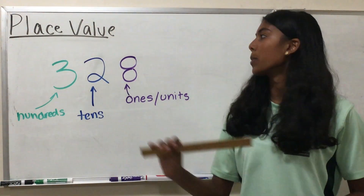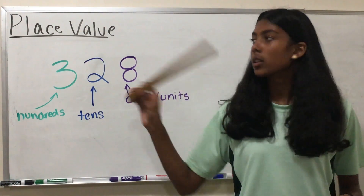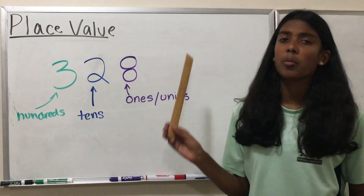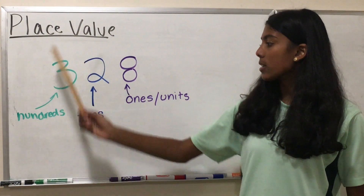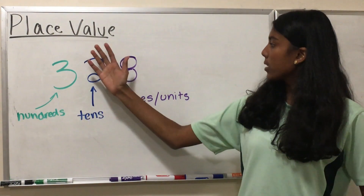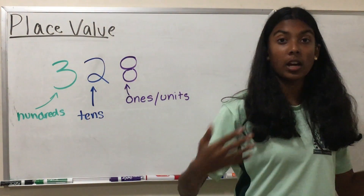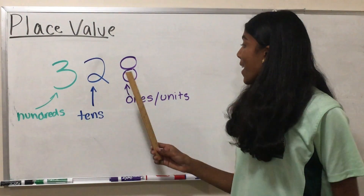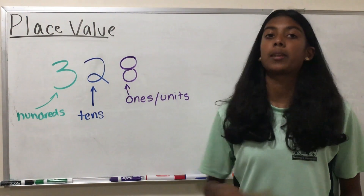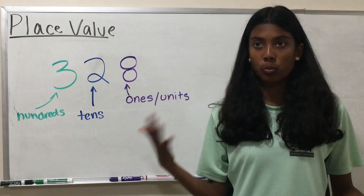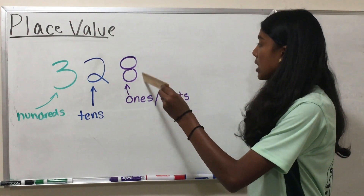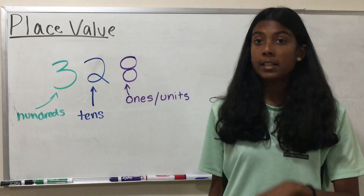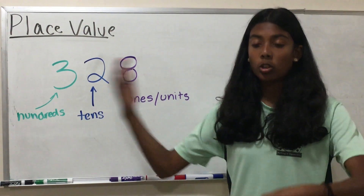Our second topic of today is place value. Place value means what it says — it's the value of the place of the number. For example, let's say we have the number 328. The place that the 3 is in is the hundreds, and it represents 300. The 2 is in the tens place and represents 20. And the 8 represents 8 because it's in the ones place. There would be a decimal point to the right of the ones. The number directly to the left of it is your ones, then you have your tens, then your hundreds, and so on.